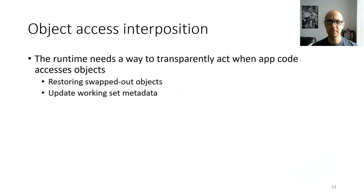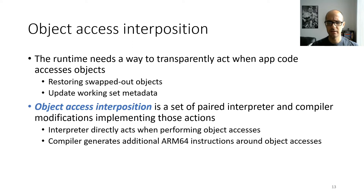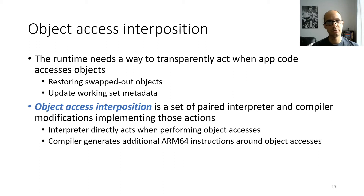The runtime also needs a way to transparently act when app code accesses objects — to restore swapped-out objects, update working set metadata, and use the stub and reclamation table when app code runs. For that we use object access interposition, which is a set of paired interpreter and compiler modifications. On the interpreter side, the interpreter directly acts when executing bytecode instructions that access objects. On the compiler side, when converting a bytecode instruction to ARM64 assembly, it generates additional ARM64 instructions before and after the object access.